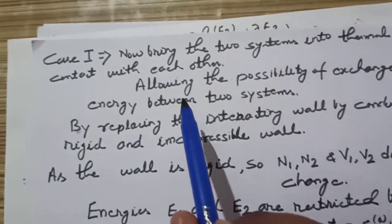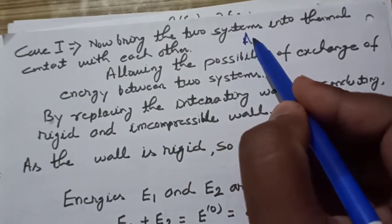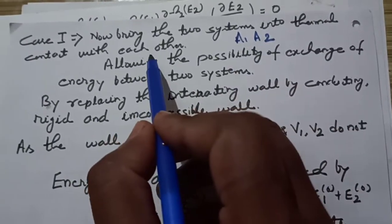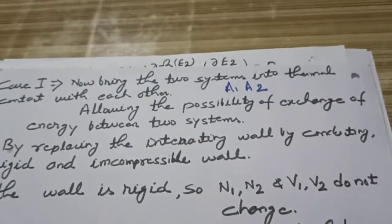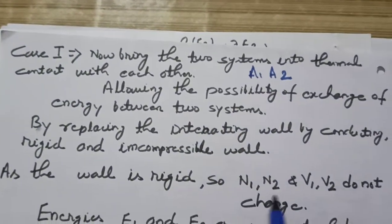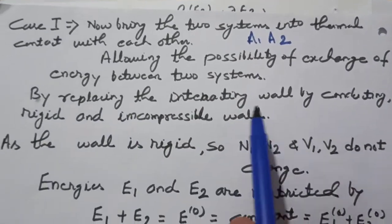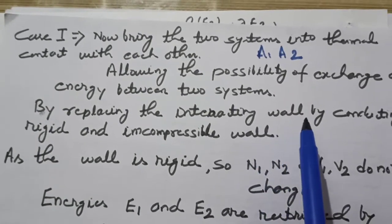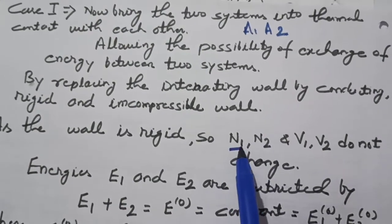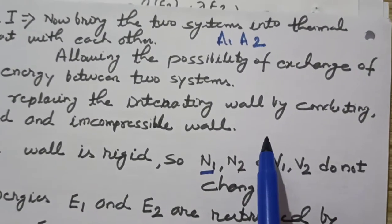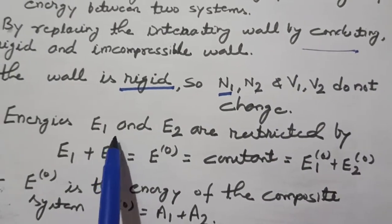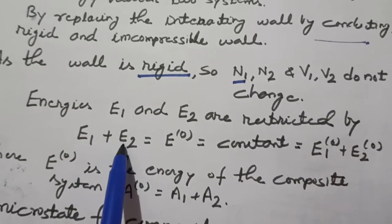Now we discuss Case 1. We bring the two systems A1 and A2 into thermal contact with each other, allowing the possibility of exchange of energy between them. This is done by replacing the interacting walls with conducting, rigid, and incompressible walls. As the walls are rigid, N1, N2 and V1, V2 do not change. Since the walls are conducting, E1 and E2 are restricted by the condition E1 plus E2 equals E0, a constant.